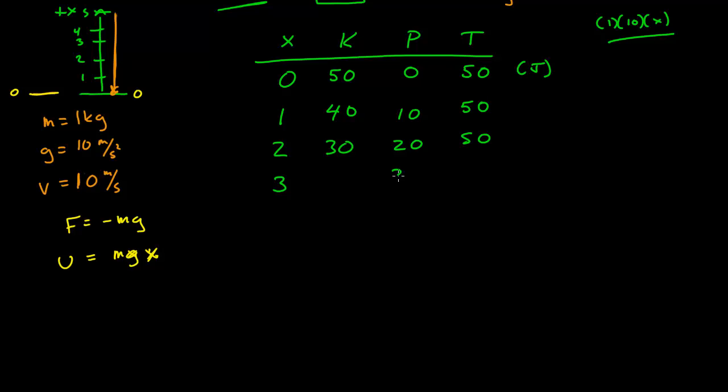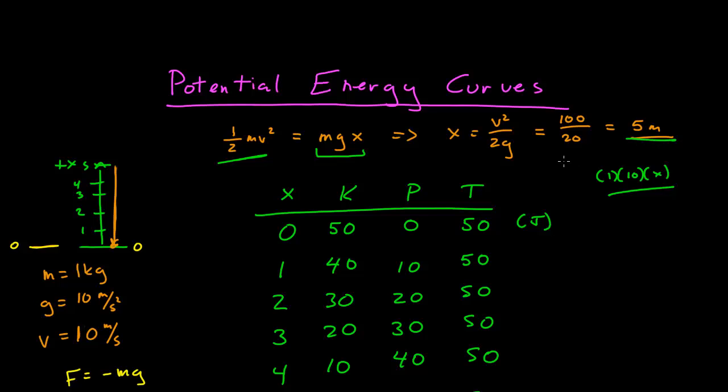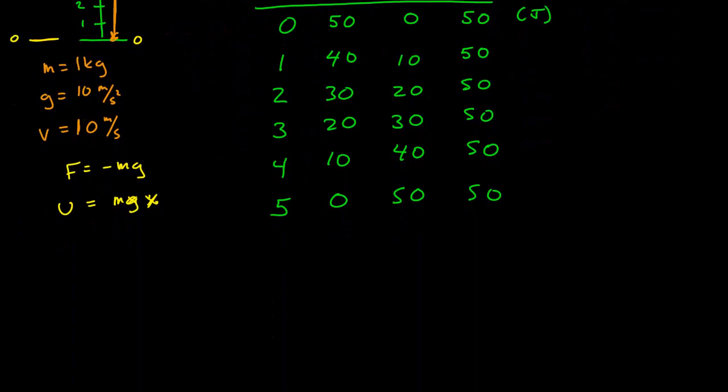At 3, the potential is 30, kinetic is 20 to keep our total. 4, 10. And at 5, 50. At 5, all of our energy is potential. That's what we had up here at 5 meters, and the velocity is 0.